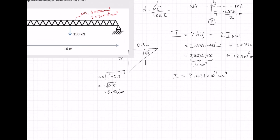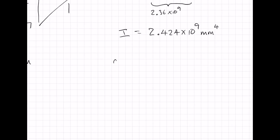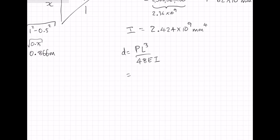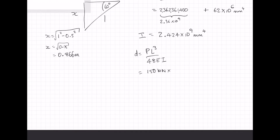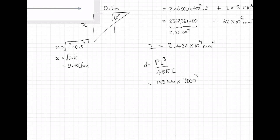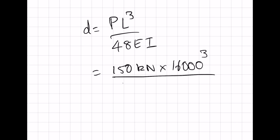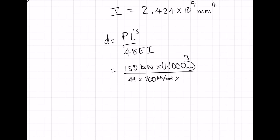We've got the information we need. D is equal to PL cubed over 48EI. P is 150 kilonewtons and L is 16 meters, which we convert to 16,000 millimeters. Dividing by 48, and E for steel is 200 gigapascals, which is the same as 200 kilonewtons per millimeter squared, times I which we just calculated: 2.424 times 10 to the 9 mm⁴.